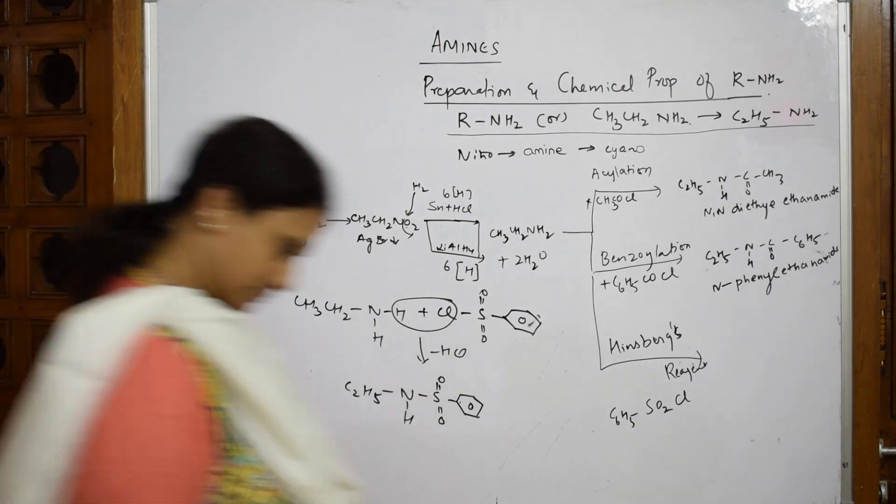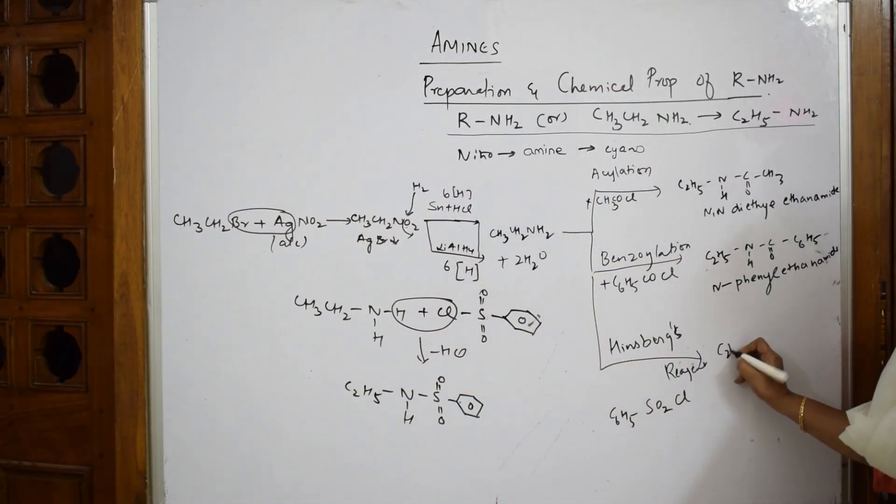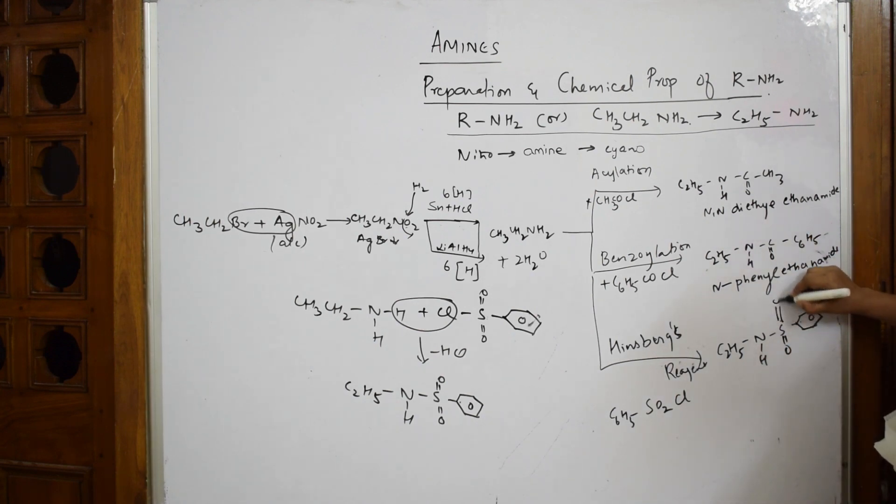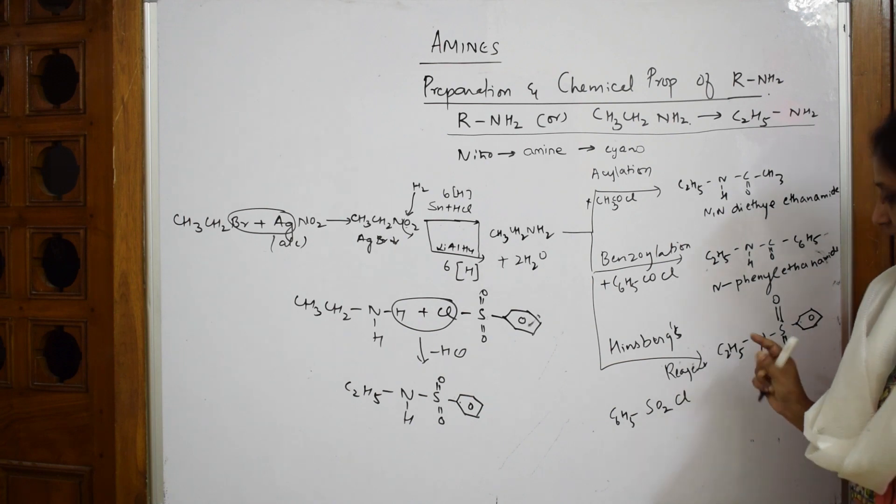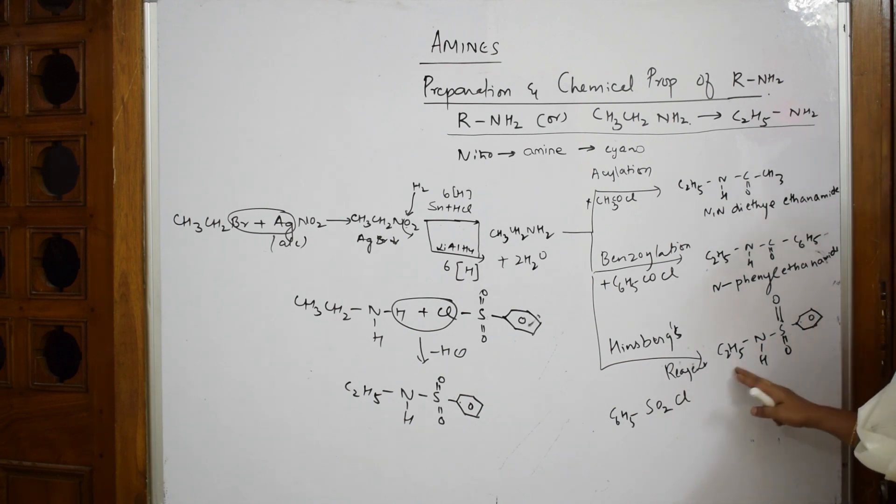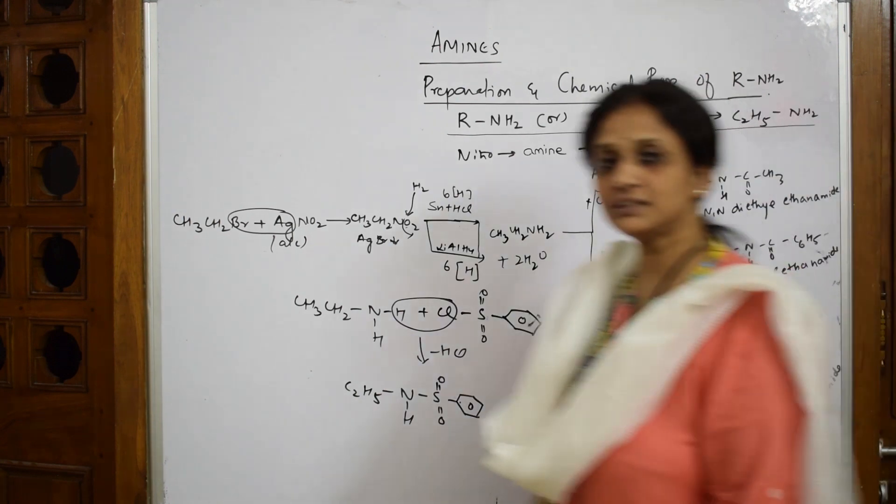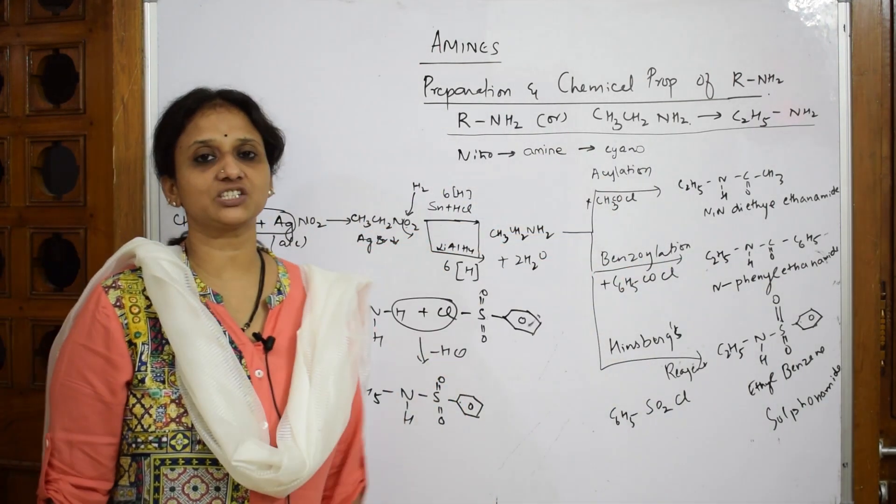Let us write that. What is this compound? This compound is benzene sulfonamide. This is ethyl, right? Now you can write ethyl benzene sulfonamide. Simple, isn't it? Now these are the complete reactions. This is one set of reactions which you can study directly.